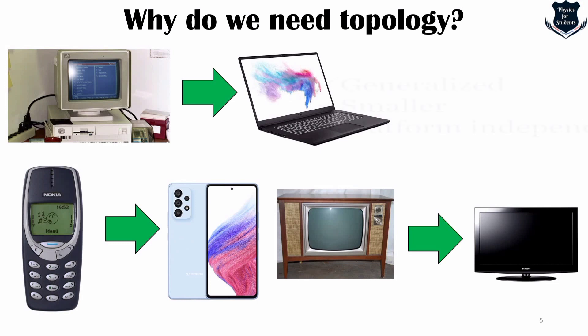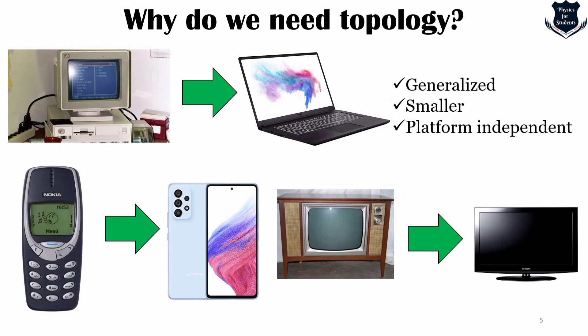The bottom line is that these things became more generalized. They became smaller and, most importantly, they became platform-independent. In technology, for example, C, C++, and Java — as they moved up the ladder — most software became platform-independent and browser-oriented so it could run anywhere independently without needing a certain operating system. Topology also serves the purpose of becoming generalized and platform-independent, as we will see in the next part of the video.